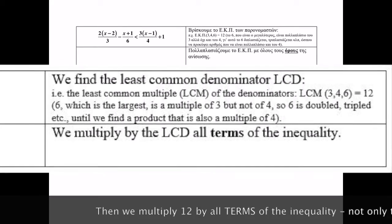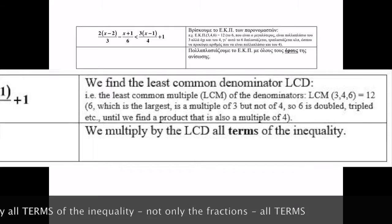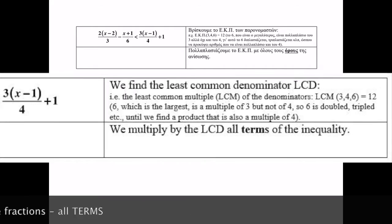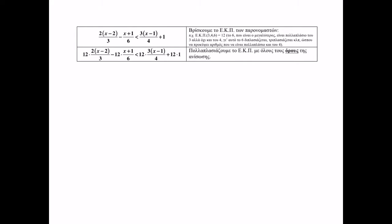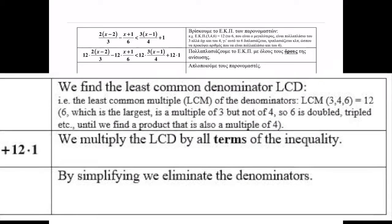Then, multiply 12 by all terms of the inequality. The inequality has 4 terms divided in 2 parts, so we want 4 12s, 1 for each term. 12 times the first term, 12 times the second, etc. As we said, 12 is multiplied by all 4 terms. But 12 is not used to multiply the numerators, it is used to be simplified with the denominators and eliminate them.